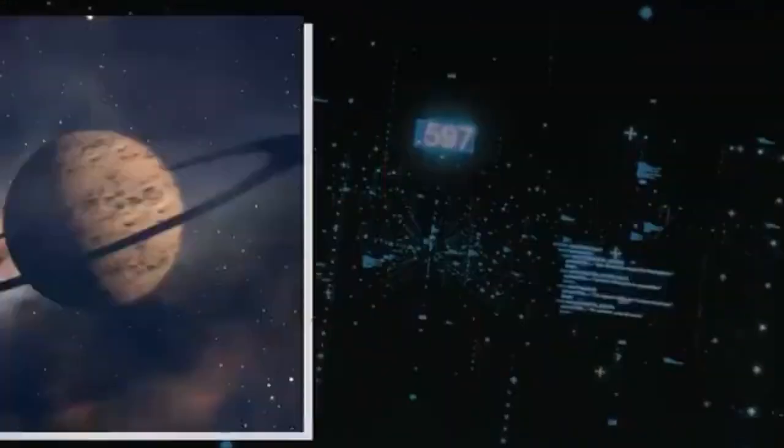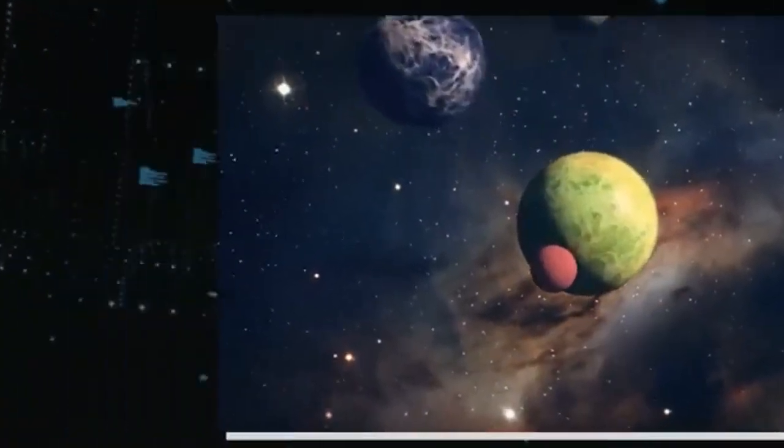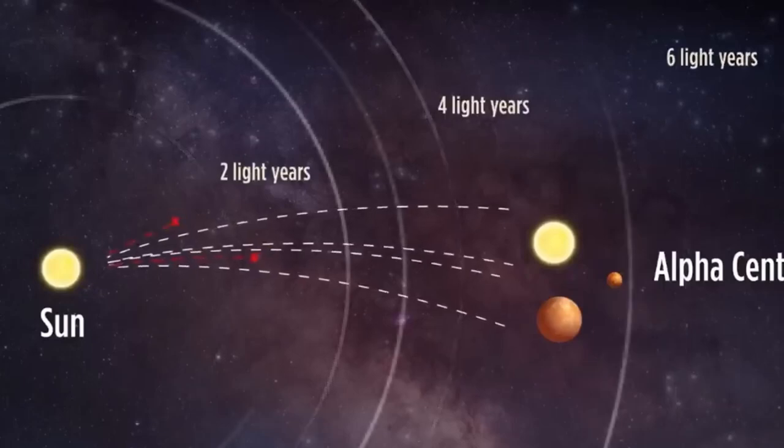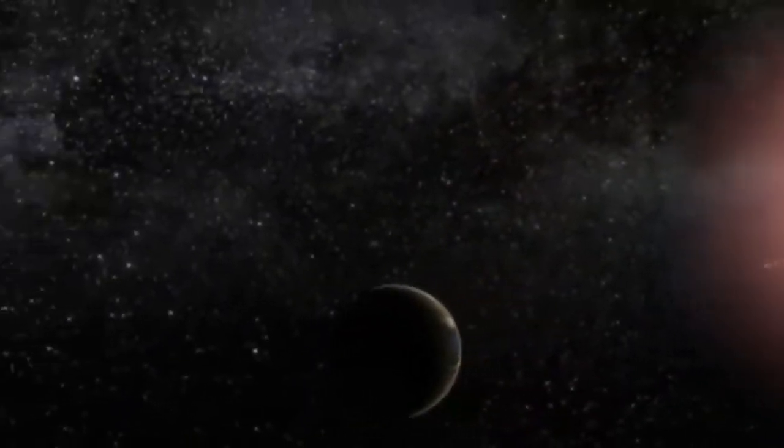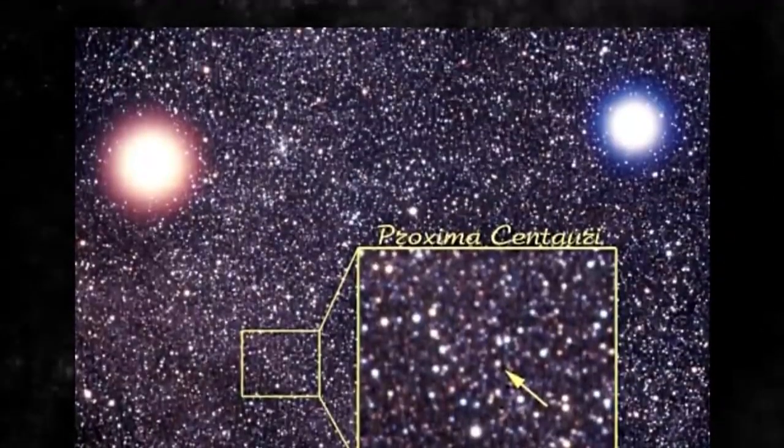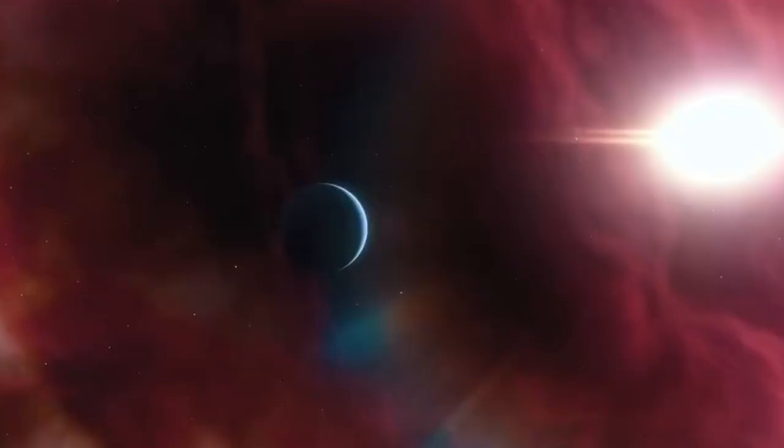Of course, the proximity of Proxima b to its parent star, Proxima Centauri, poses significant challenges for potential life on this exoplanet. Naturally, the planet is subjected to intense radiation from its star. The radiation bombardment can potentially alter its chemical composition and impact any potential biosphere.